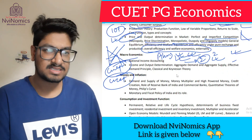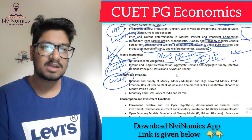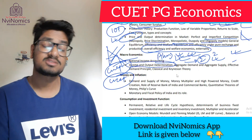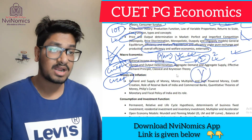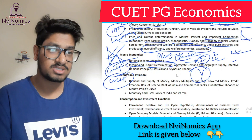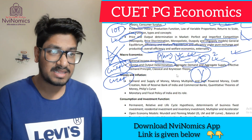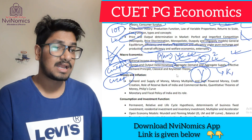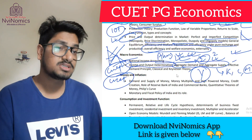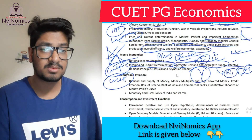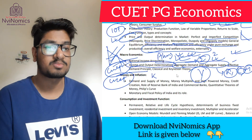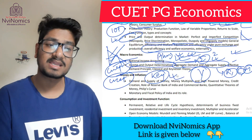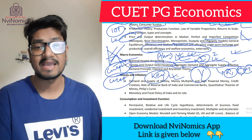In income and output determination, you have to see everything — from where output is determined and what its sources are. Aggregate demand and aggregate supply are listed, but you also need to study aggregate demand from the Keynesian, classical, and monetarist perspectives. The effective demand principle means core Keynesian theory is being asked, so the Keynesian multiplier and its features will come.